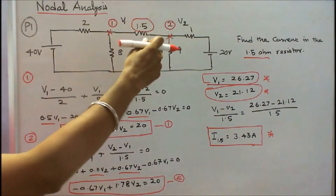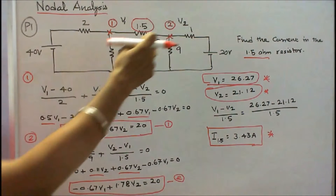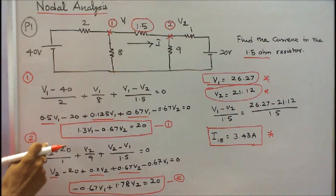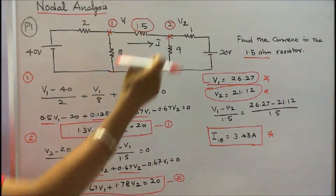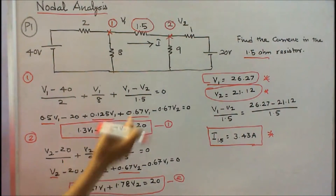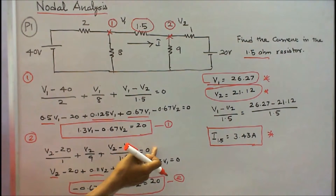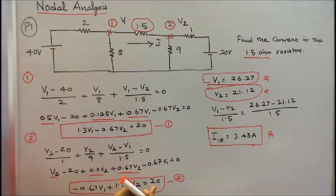Similarly, at node 2, V2 is considered as higher potential. The nodal equation is: (V2 minus 20) divided by 1, plus V2 by 9, plus (V2 minus V1) divided by 1.5, equals 0. Simplifying gives: minus 0.67 V1 plus 1.78 V2 equals 20. This is equation 2.